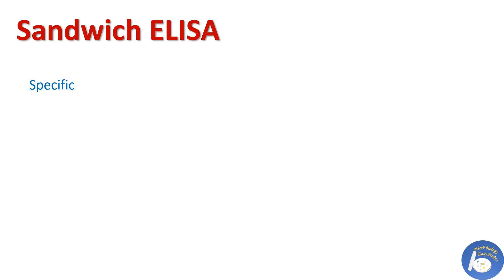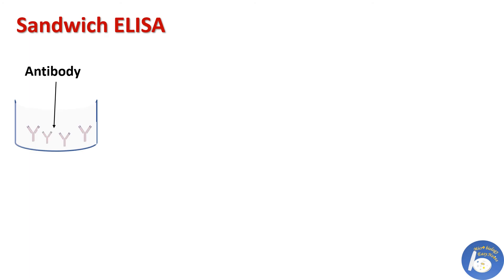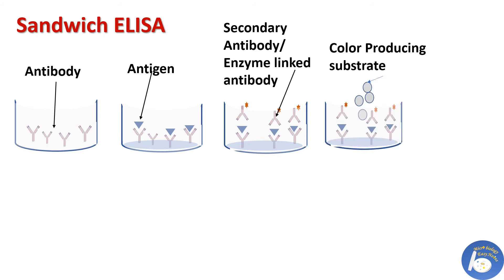Sandwich ELISA: in sandwich ELISA, a specific antigen is identified using antibodies. It is called sandwich ELISA because the antigen to be identified is sandwiched between primary antibody and secondary antibody. In the first step, primary antibody is added to the well of a microtiter plate. After incubation and washing, a solution containing the unknown antigen is added. After another incubation and washing step, secondary antibody is added. Then again, after incubation and washing, a color-producing substrate is added.